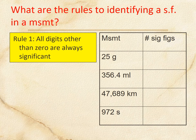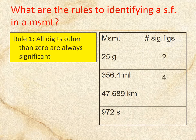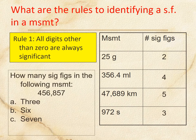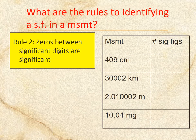How do we identify the number of sig figs? All digits other than zero are always significant — this is just practice. So 25 grams is two sig figs, 356.4 is four, 47,689 is five, and 972 is three. How many sig figs are in the following measurements? If you said six, you are correct.